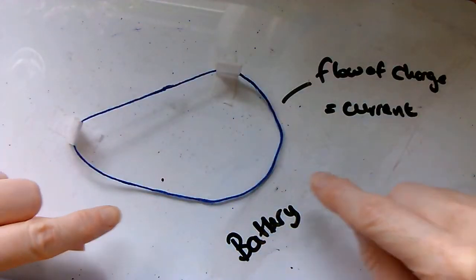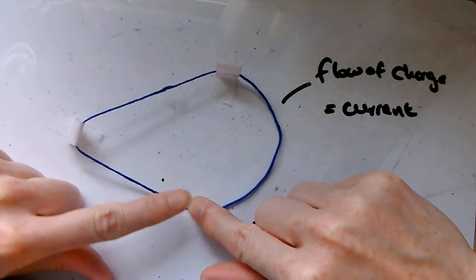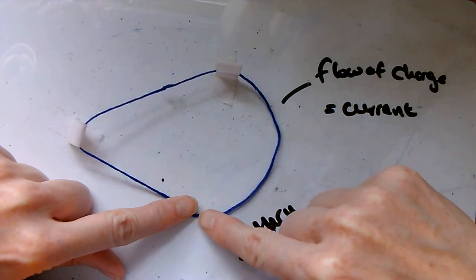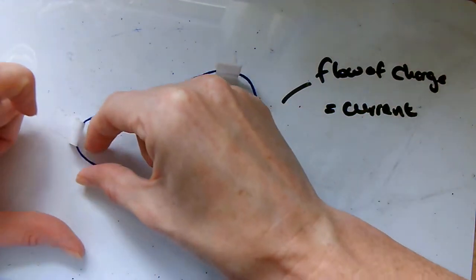As soon as the battery is turned on, the charges start to flow, and they start to flow in every part of the circuit at the same time.